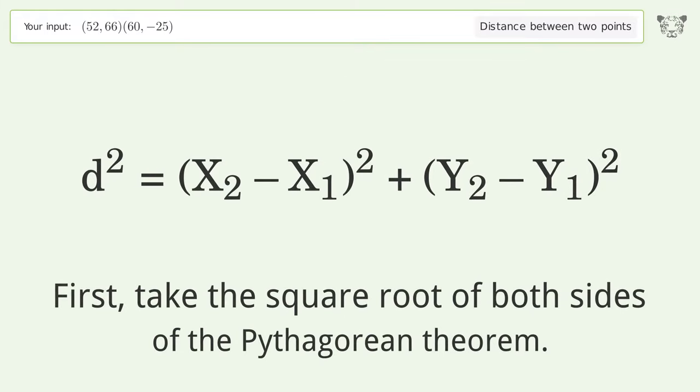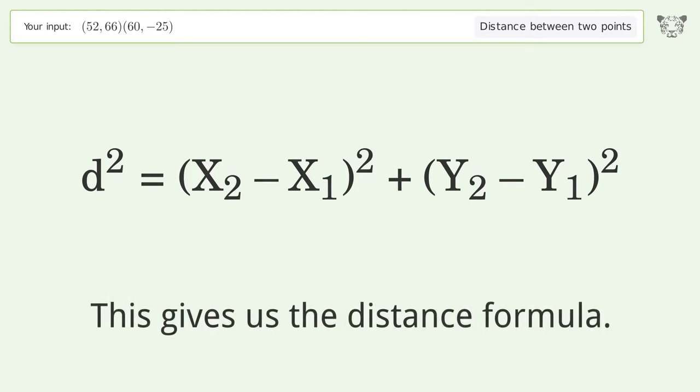First, take the square root of both sides of the Pythagorean theorem. This gives us the distance formula.